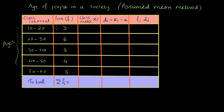So the frequency for 10 to 20 years is 3, 20 to 30 years is 6. That means there are 3 people aged between 10 to 20, 6 people aged between 20 to 30 and so on. Now our objective here is to find the mean age in the society given to us.